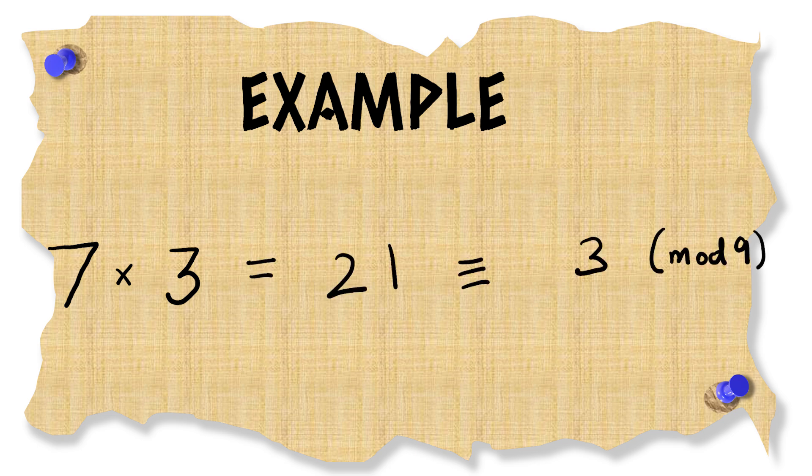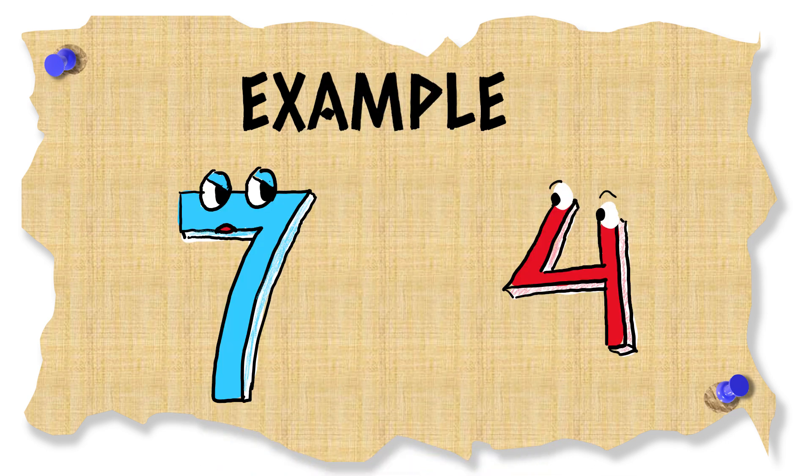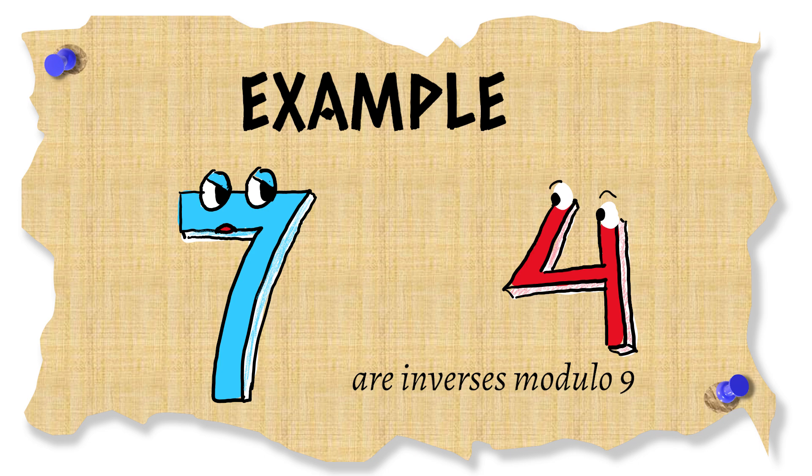As an example consider 7 modulo 9. Multiplying it by 2 gives us 7 times 2 which is 14 and it leaves the remainder of 5 when divided by 9. Multiplying it by 3 gives 21 which leaves the remainder of 3 when divided by 9. And multiplying by 4 gives us 28 which tada has a remainder of 1. So we say that 7 and 4 are inverses modulo 9.